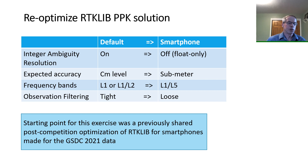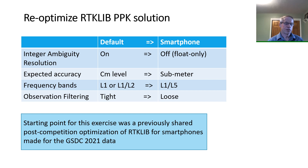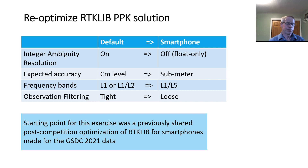Here I show some top-level differences between what the default RTKLib PPK solution has been optimized for and the smartphone optimization. Generally, the goal of a PPK solution is to resolve the integer ambiguities in the carrier phase observation, which improves solution accuracy from sub-meter or decimeter level to centimeter level. In our case, the quality of the smartphone measurements is too low to reliably resolve the ambiguities. This means we can be less conservative when discarding lower quality observations since we don't need to worry about corrupting the ambiguity resolution process. Also, because our expected accuracy is lower, errors such as single cycle slips are now smaller than our expected accuracy and can provide more value than in a solution with centimeter level accuracies.